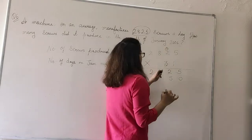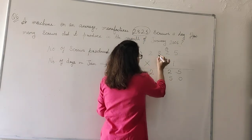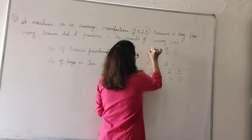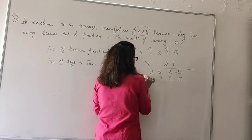3, 2's are 6 plus 1, 7. 3, 8's are 24: 4 down, 2 carry over. 3, 2's are 6 plus 2, 8.